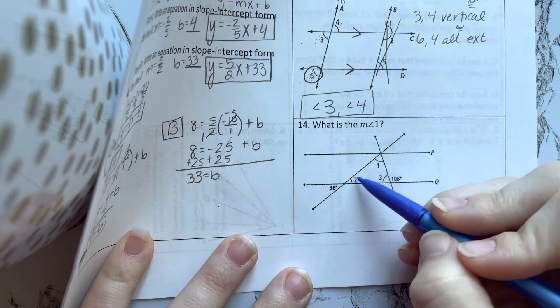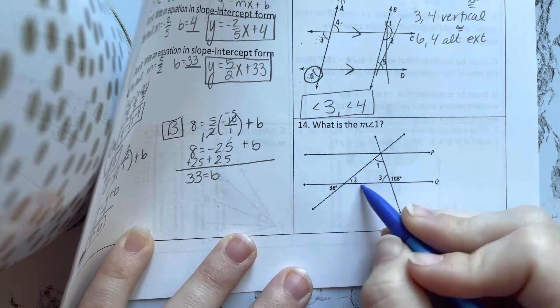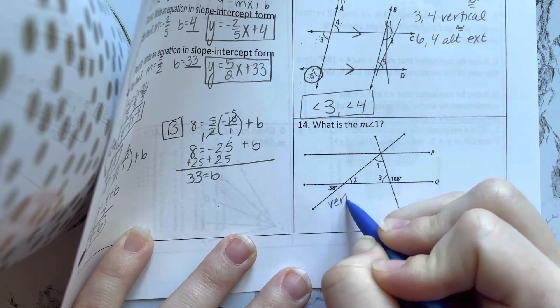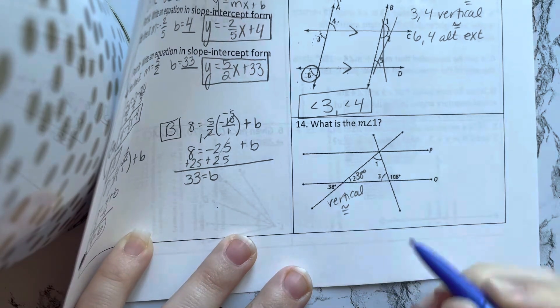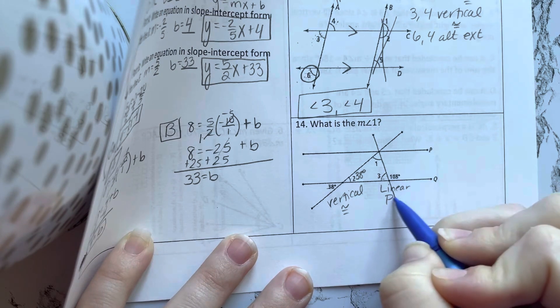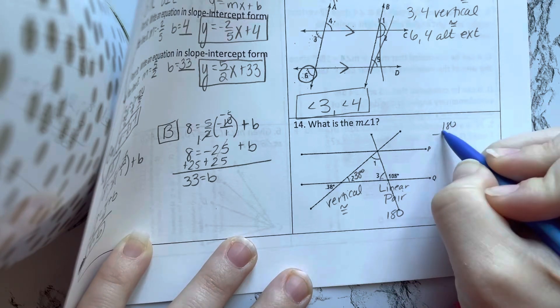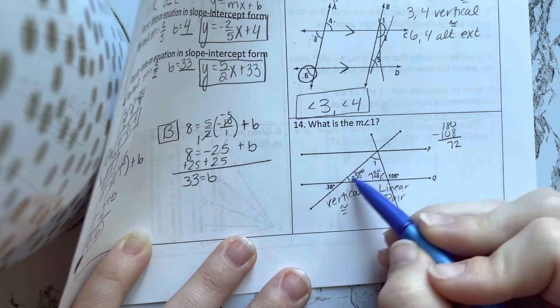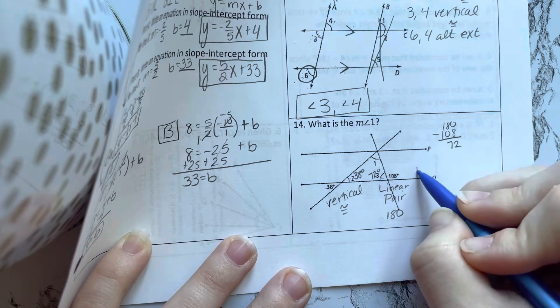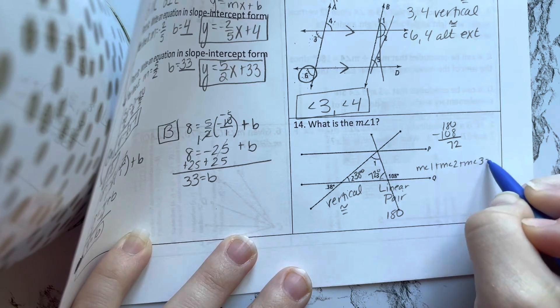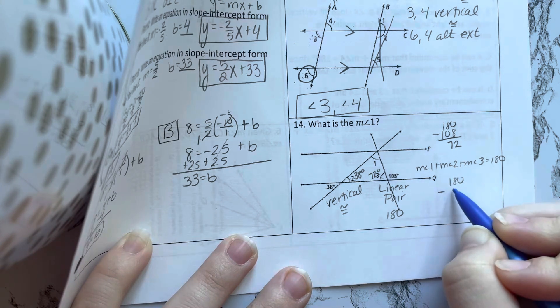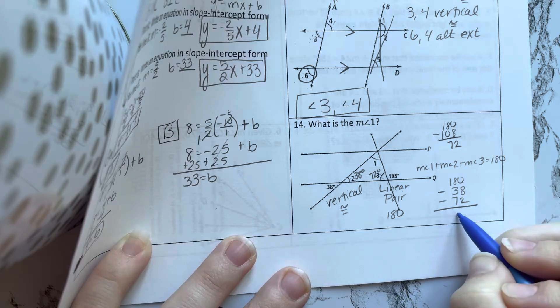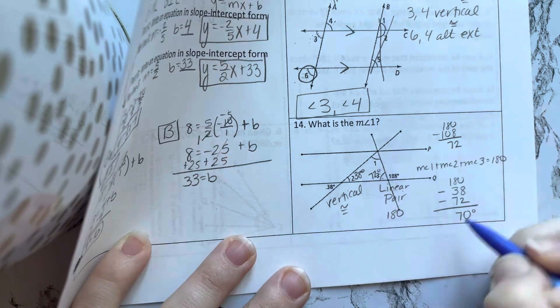Here I need to find the measure of angle 1. I'll notice this makes a triangle. So let's see if I can figure out these angles to find 1. Well, these two are vertical. Vertical we learned are congruent. So this must be 38 degrees here. These two are a linear pair. Linear pair we learned add up to 180. So if I do 180 minus 108, I get 72 here for angle 3. Three angles in the triangle add up to 180. So the measure of angle 1 plus the measure of angle 2 plus the measure of angle 3 add to 180. I know two of those angles. So 180 minus 38 and minus 72. And that is 70 degrees for the measure of angle 1.